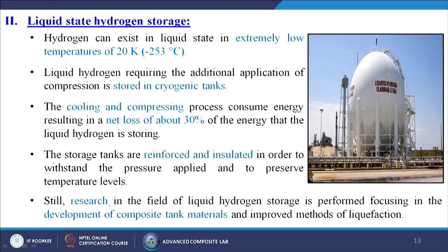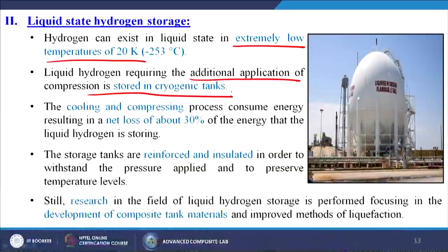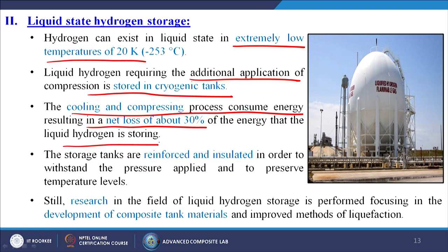Liquid state hydrogen storage: hydrogen can exist in liquid state at extremely low temperatures of 20 K or less — that is minus 253 degrees centigrade. Liquid hydrogen requires additional compression and is stored in cryogenic tanks, because minus 253°C is not possible without using liquid nitrogen. The cooling and compressing process consumes energy, resulting in a net loss of about 30 percent of the energy that the liquid hydrogen is storing. The storage tanks are reinforced and insulated to withstand pressure and preserve the temperature level constantly. Research in liquid hydrogen storage focuses on developing composite tank materials and improved liquefaction methods.